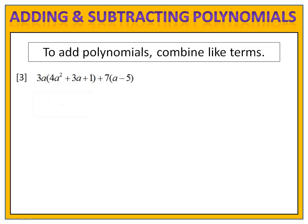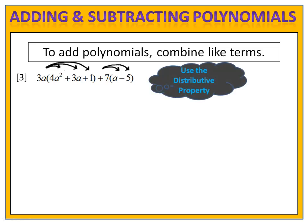In exercise 3, we see that we have to use the distributive property. We use the distributive property on each of these terms and then we can work on adding by combining. As we work through, we remember that when we multiply exponents, we multiply the numbers in front and then we add the exponents together. So, in the case of 3a times 4a squared, we have 12a to the third.